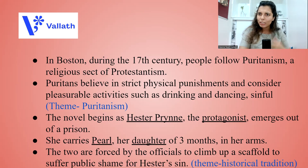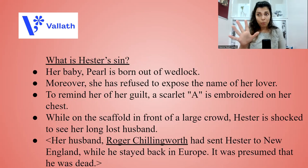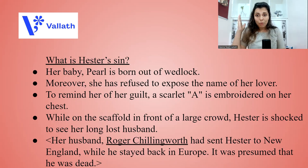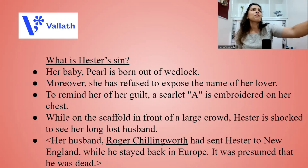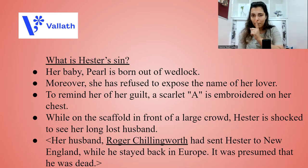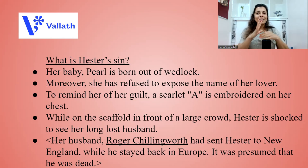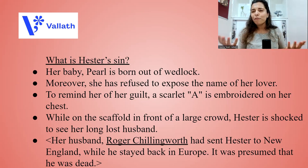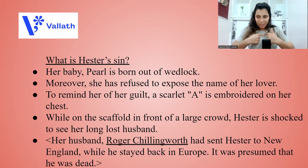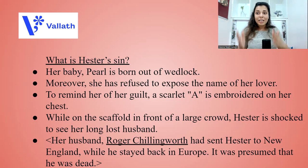What is Hester's sin? Her baby Pearl is born out of wedlock — she is not married, and yet there is a baby. Moreover, she has refused to expose the name of the lover. The people around her demand to know who the father is, but Hester does not speak a word. To remind her of her guilt, she is told to wear the scarlet letter on her chest. Note the irony: it is a punishable mark, yet the way she wears that embroidered letter A, it looks fanciful. In reality it marks her as an adulteress who has committed a crime.